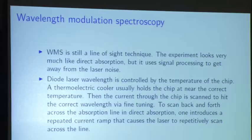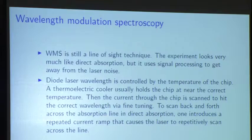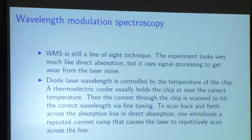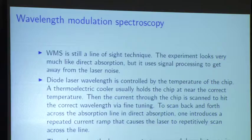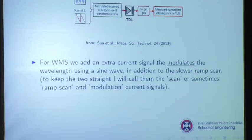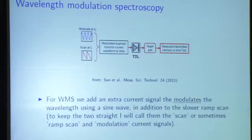The diode laser wavelength is controlled by temperature — you put it on a thermoelectric cooler, which sets the nominal temperature, and then you sweep the current through the chip for fine tuning. You can scan back and forth across the absorption line with a current ramp. That causes the laser power to scan, which can introduce noise.